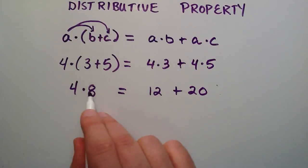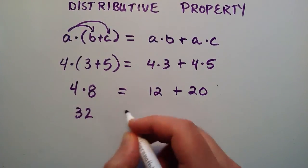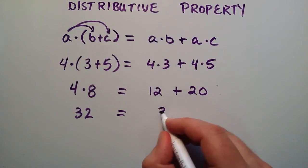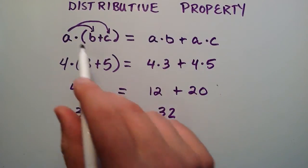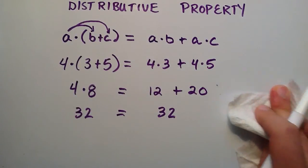So over here we have 4 times 8, and 4 times 8 is equal to 32, and 12 plus 20 is equal to 32 as well. So you can see from this example that the distributive property works. So let's just go ahead and do another example here.